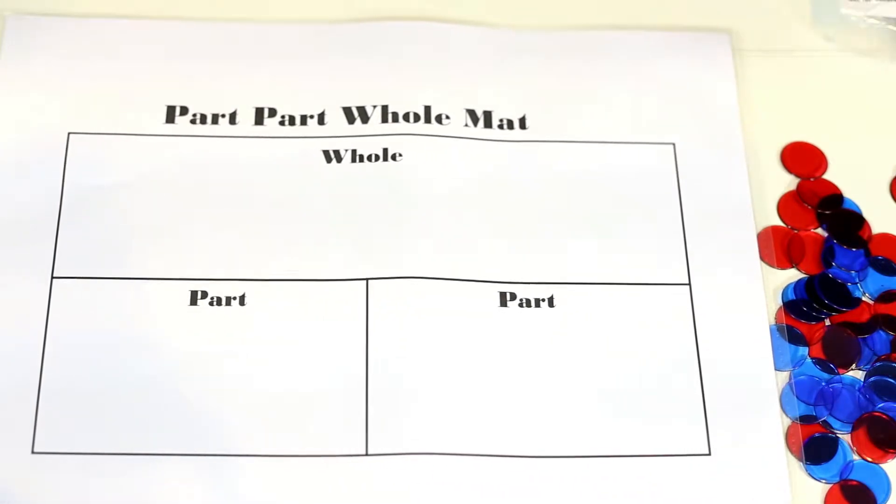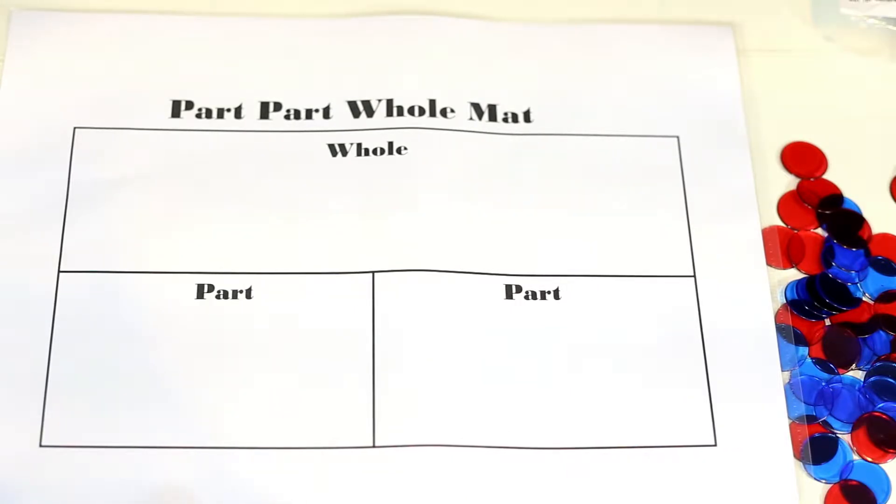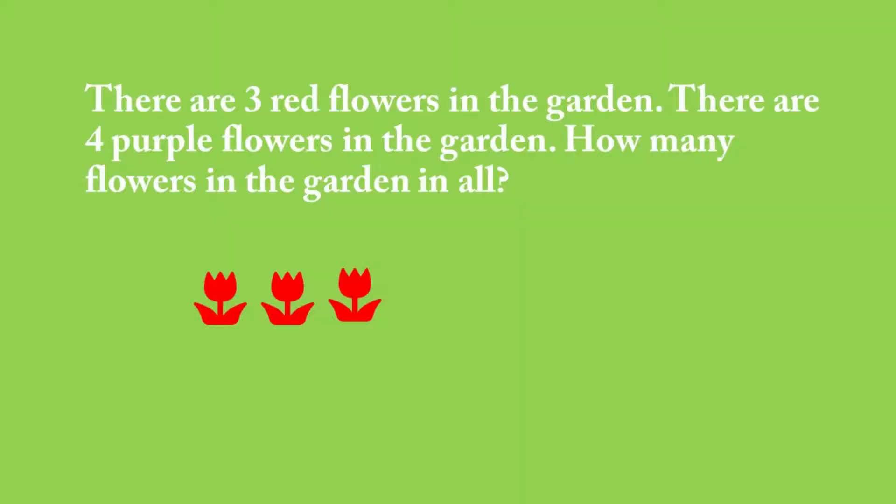When I introduce activities like this to my learners, I always start with a story problem. There are three red flowers in the garden. There are four purple flowers in the garden. How many flowers are in the garden in all?